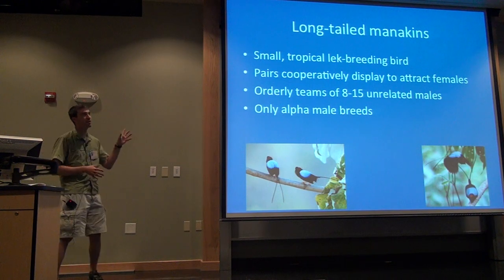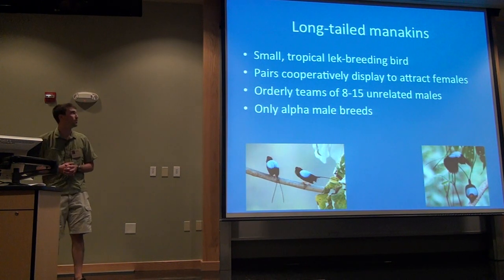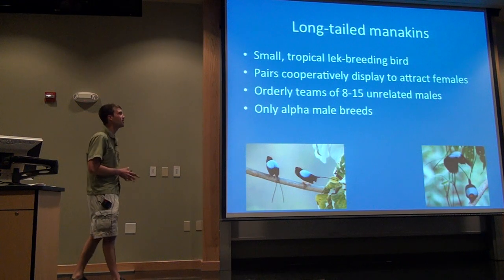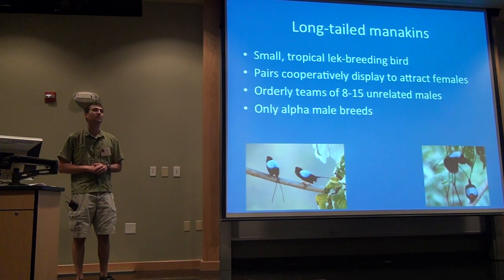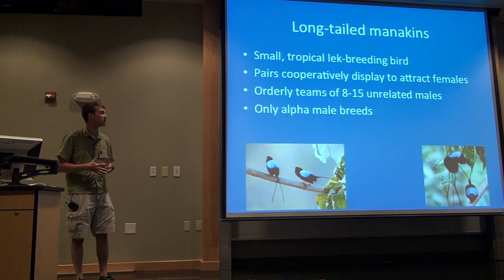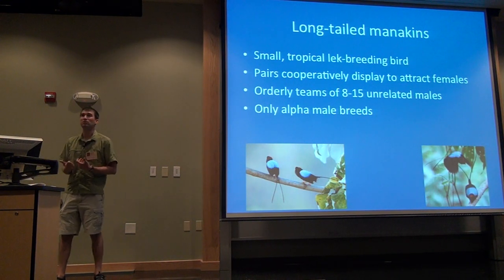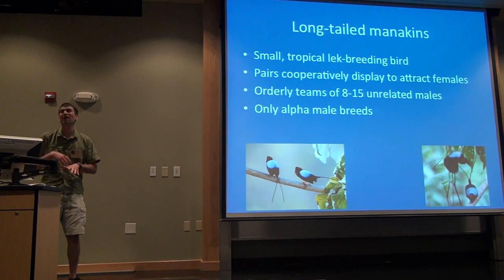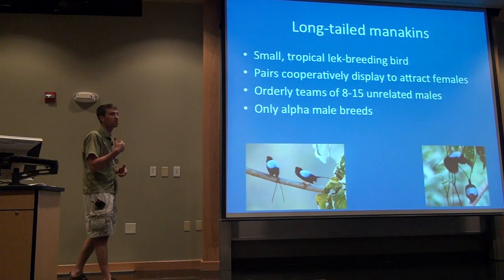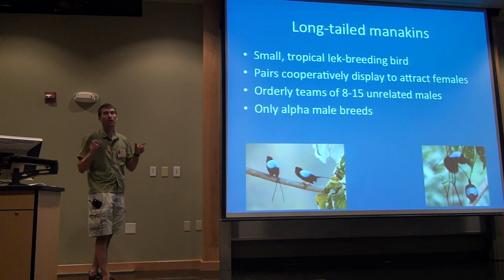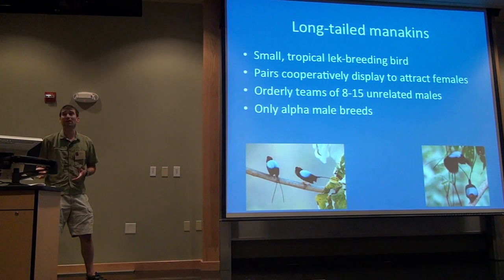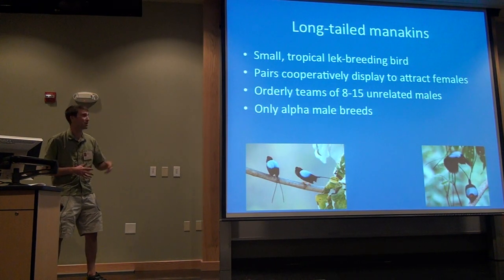Dave and I would argue that we might have a good exception to this general rule with the long-tailed manakins. This is a small tropical bird, about the size of a house sparrow — actually a little bit smaller. They're a lek-breeding bird. Unlike a lot of lek-breeding birds, such as sage grouse, these guys aren't just in it for themselves. They're actually doing cooperative displays to attract females to their lek site — in this case a central perch zone. They're unrelated, which is a neat thing about this system. It's not related to kin at all.